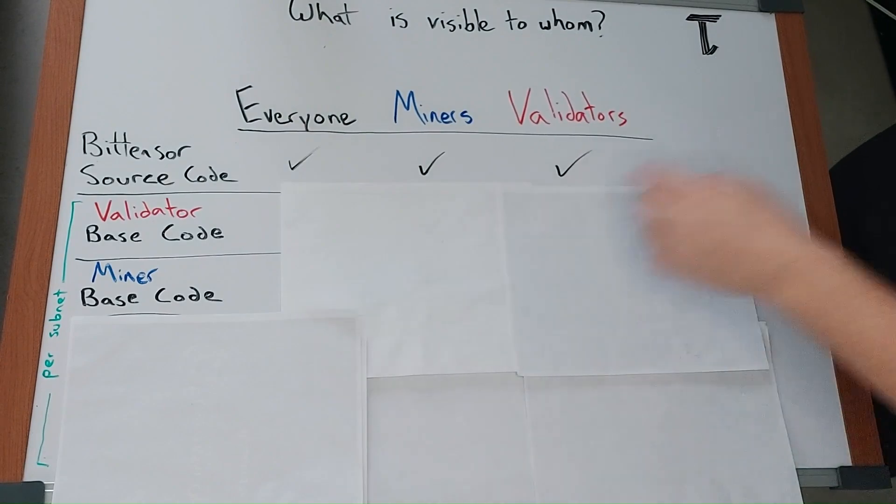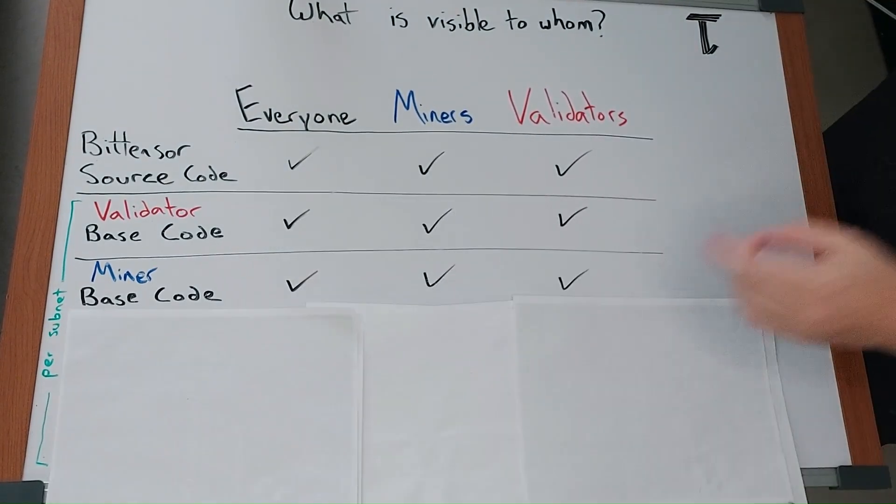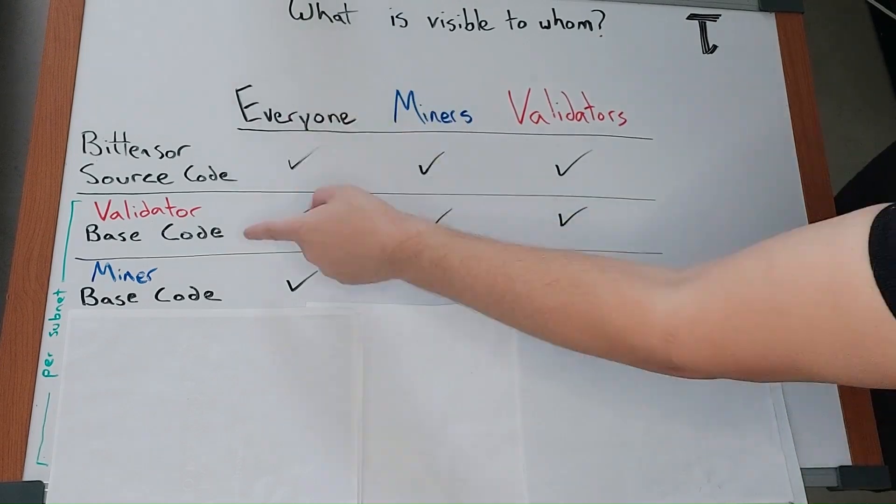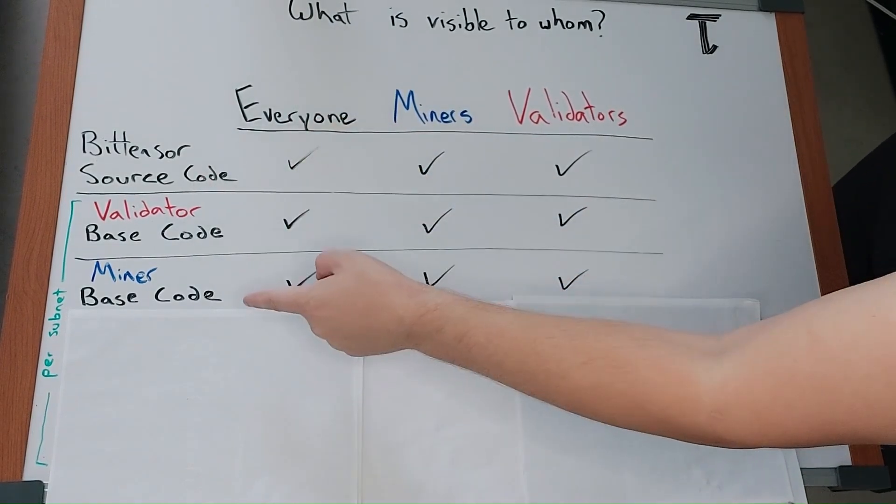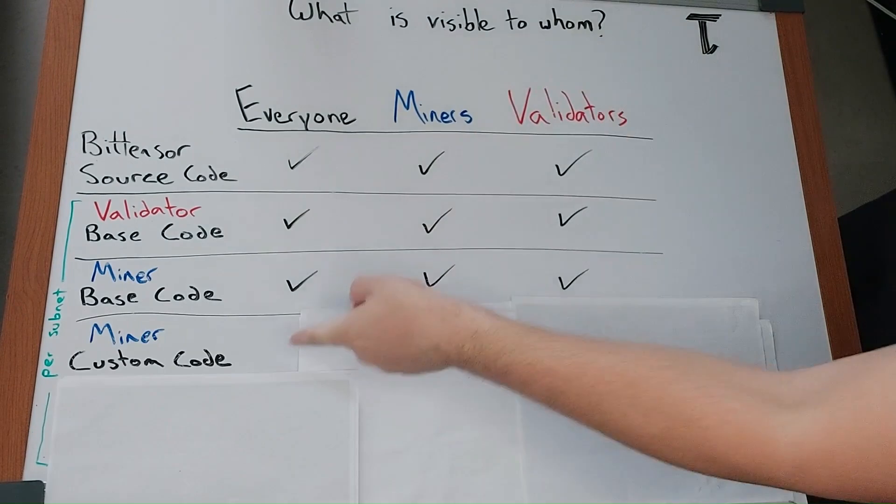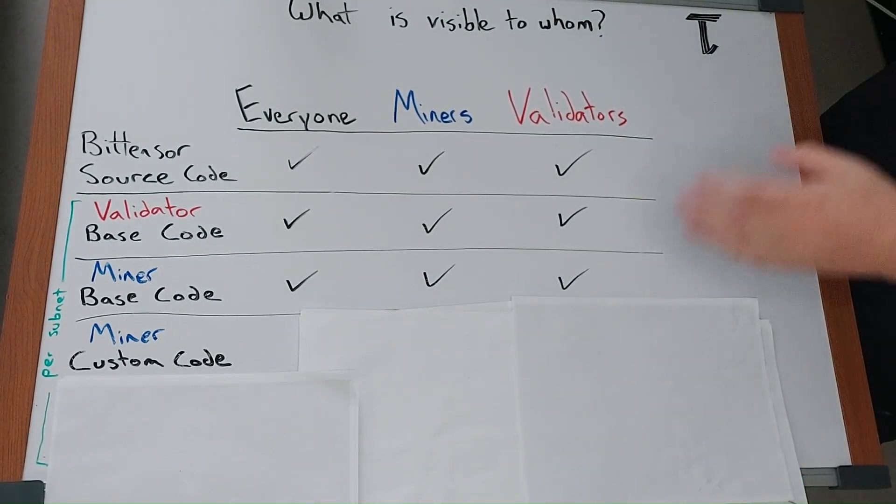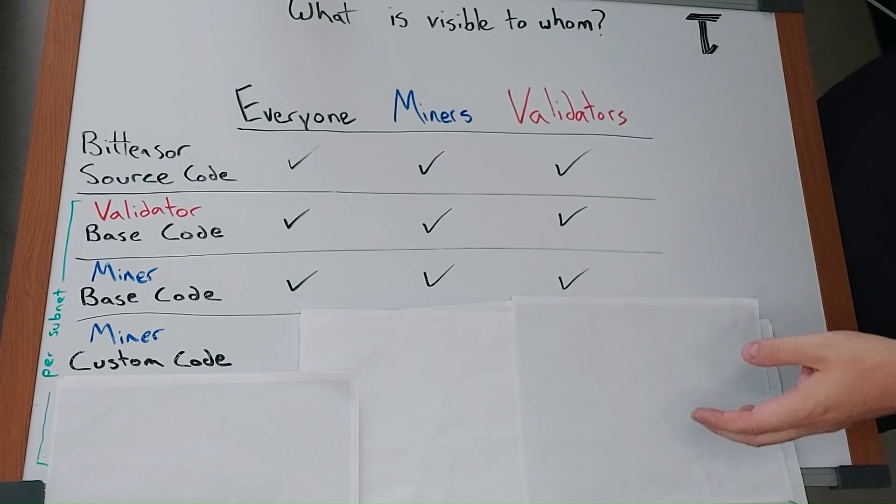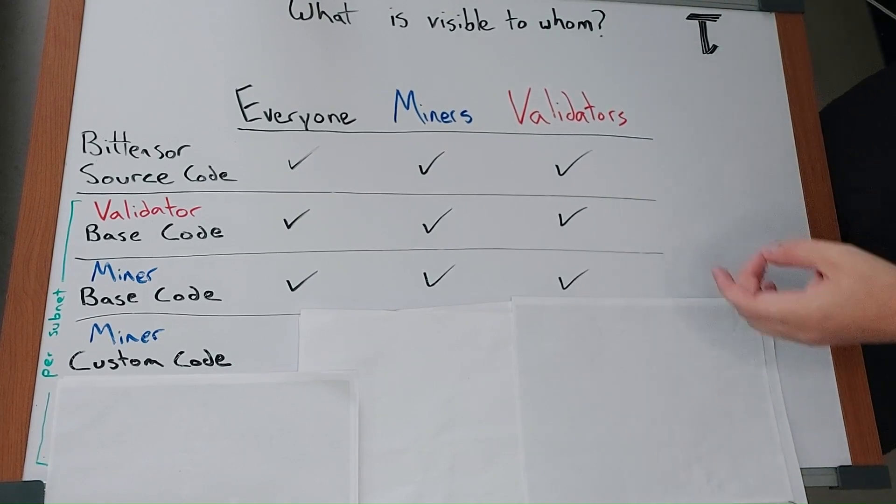Base validator and miner code are visible to everyone. Everyone can go and see exactly how the reward mechanism works and how miners submit their work. Miners can modify the base miner code. When they do this, they aren't going to make their changes public as it gives them an edge over the competition.